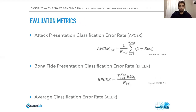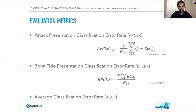For fair literature comparison, we adopted standardized evaluation metrics. The Attack Presentation Classification Error Rate (APCER) is the proportion of attack presentations incorrectly classified as authentic. The Bona Fide Presentation Classification Error Rate (BPCER) indicates the proportion of authentic presentations incorrectly classified as attacks. And finally, the Average Classification Error Rate (ACER) is the mean of APCER and BPCER at a decision threshold determined on the validation step.